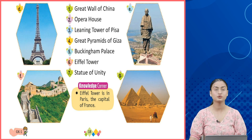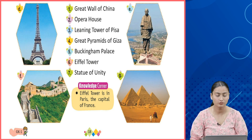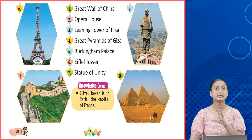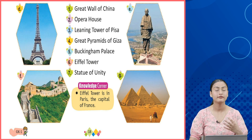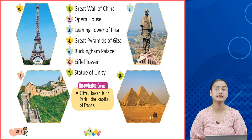G is the Great Pyramids of Giza — match it with number 4. So students, these are the monuments found in different countries. They are very famous monuments and they each have different histories attached to them.